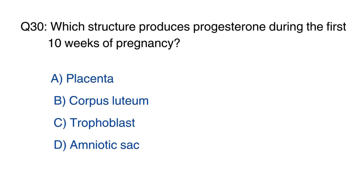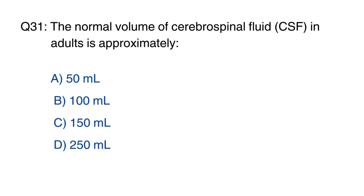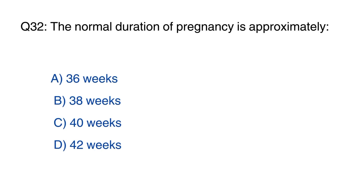Question 30 and 31: Which structure produces progesterone during the first 10 weeks of pregnancy? The normal volume of cerebrospinal fluid (CSF) in adults is approximately 150 ml. The normal duration of pregnancy is approximately 40 weeks.